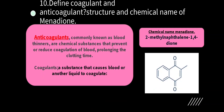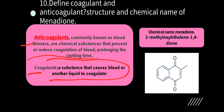Tenth question: define coagulant and anticoagulant, and give the structure and chemical name of menadione. Anticoagulants, commonly known as blood thinners, are chemical substances that prevent or reduce the coagulation of blood and prolong the clotting time. Coagulants are the opposite — substances that cause blood or another liquid to coagulate. Chemical name of menadione: 2-methylnaphthalene-1,4-dione.